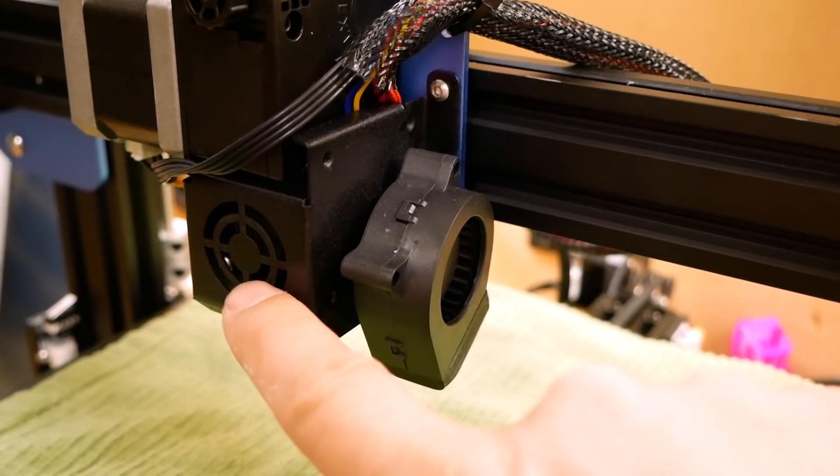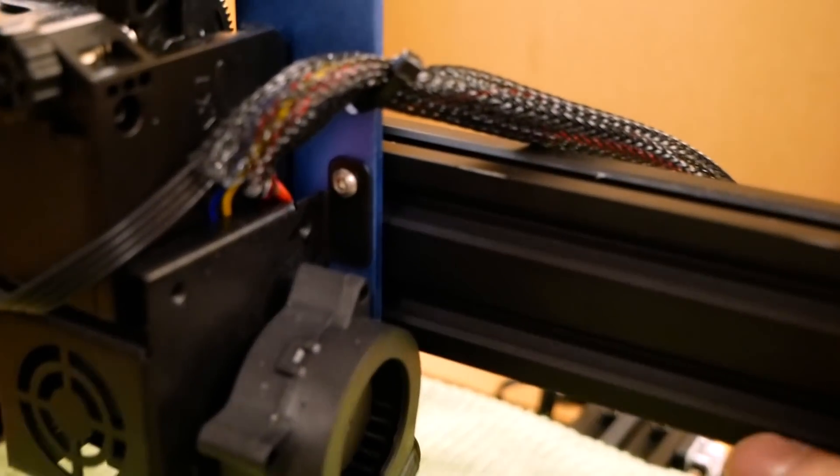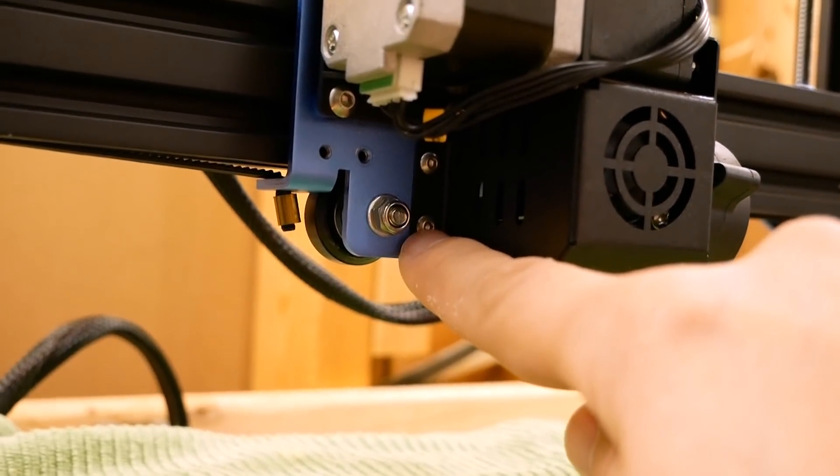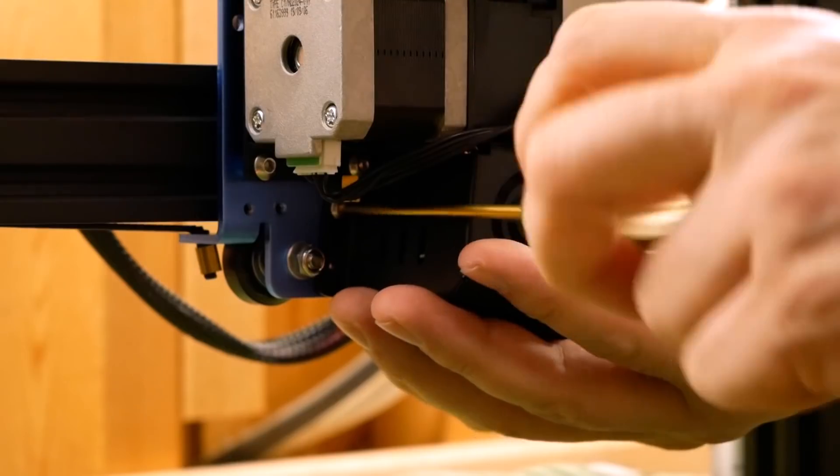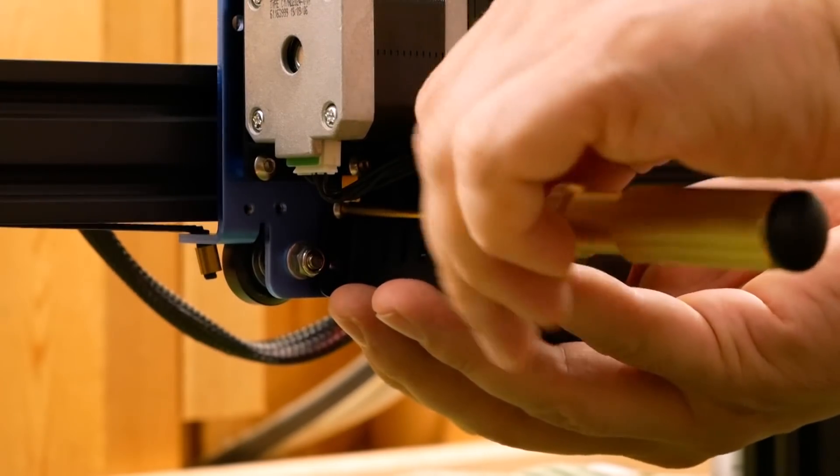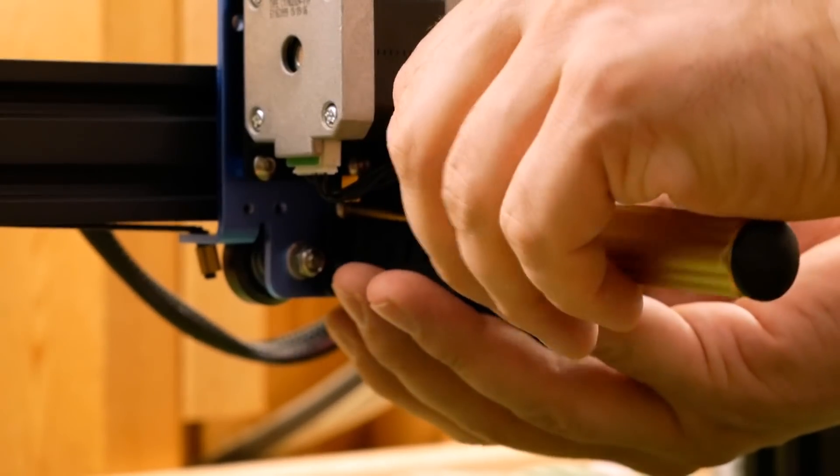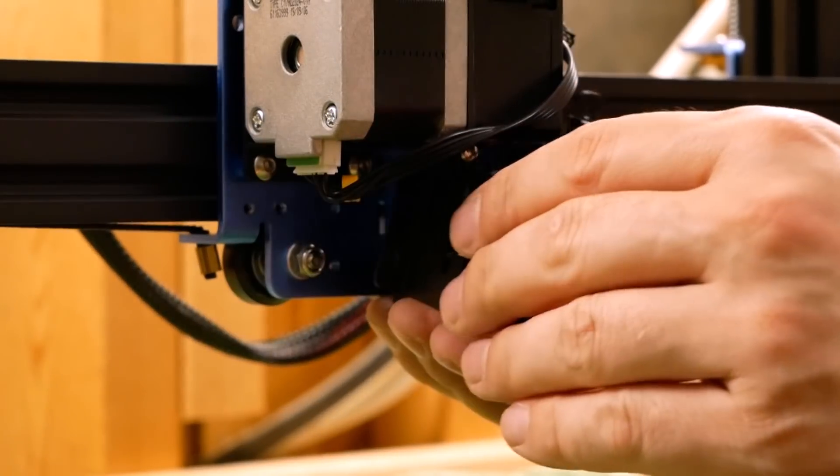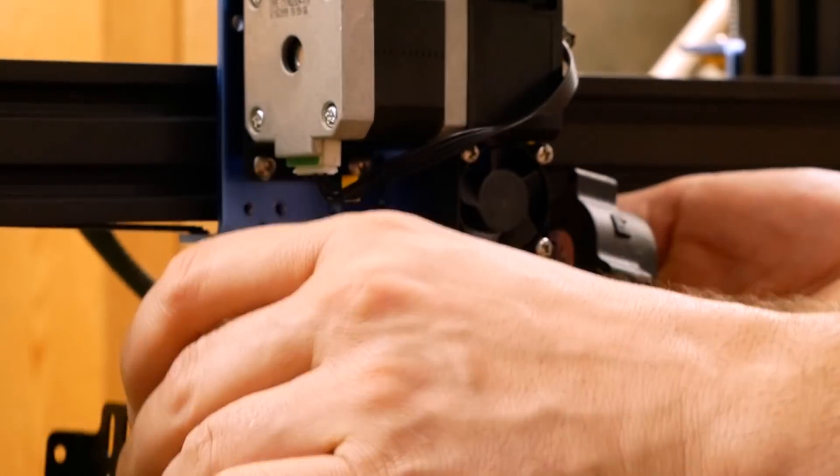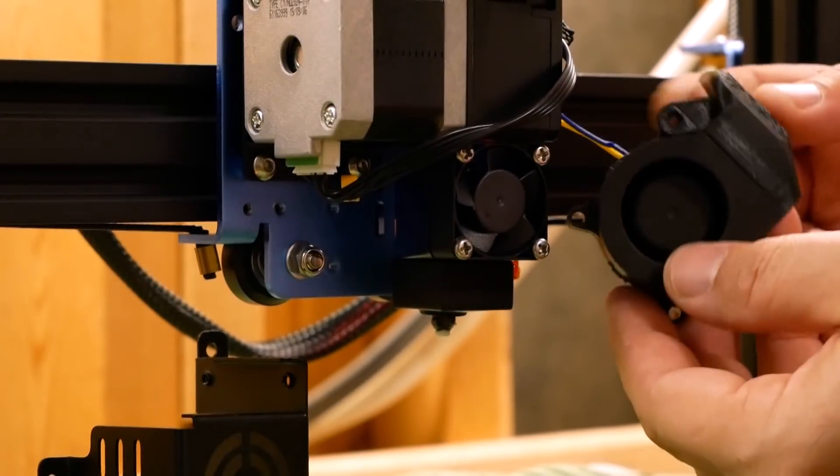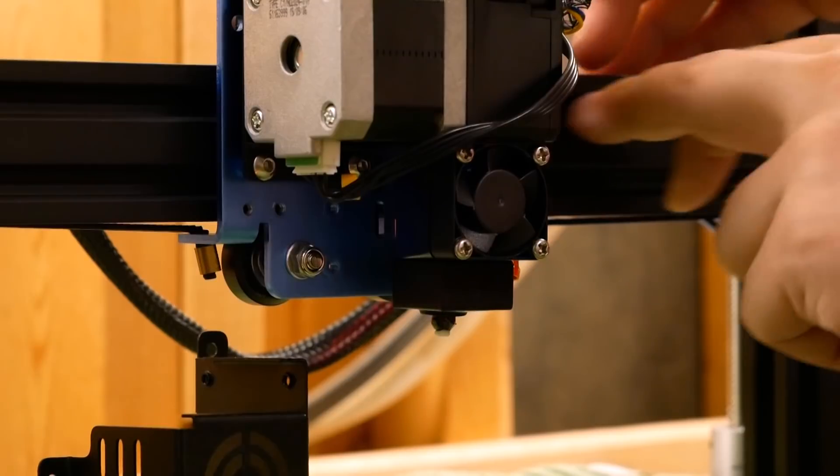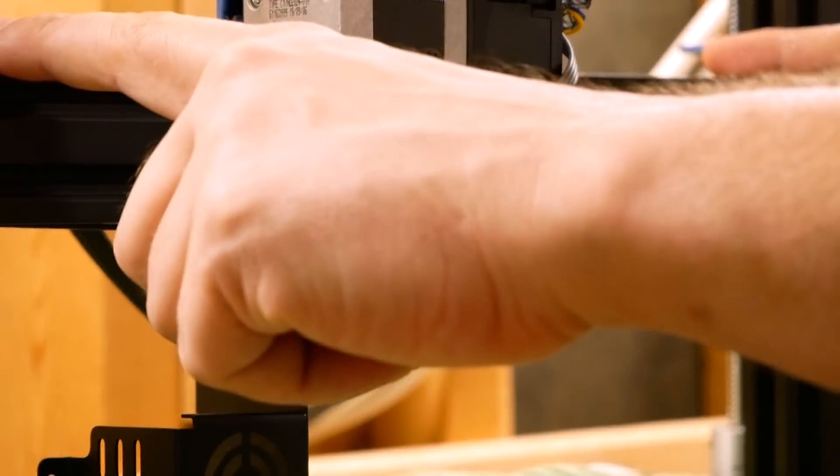Next we need to remove this cover for the heat sink. And in order to do that we're going to remove this screw, and on the other side we're going to remove these two screws. I'm going to support this as it comes loose. This cover is going to come off and the fan is going to hang loose and we'll just hang that over the X gantry.